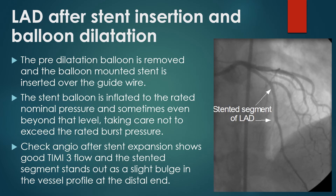The balloon-mounted stent is inserted over the guide wire. Position of the stent is confirmed by check angiograms on fluoroscopy. The stent balloon is inflated to the rated nominal pressure, and sometimes even beyond that level, taking care not to exceed the rated burst pressure.